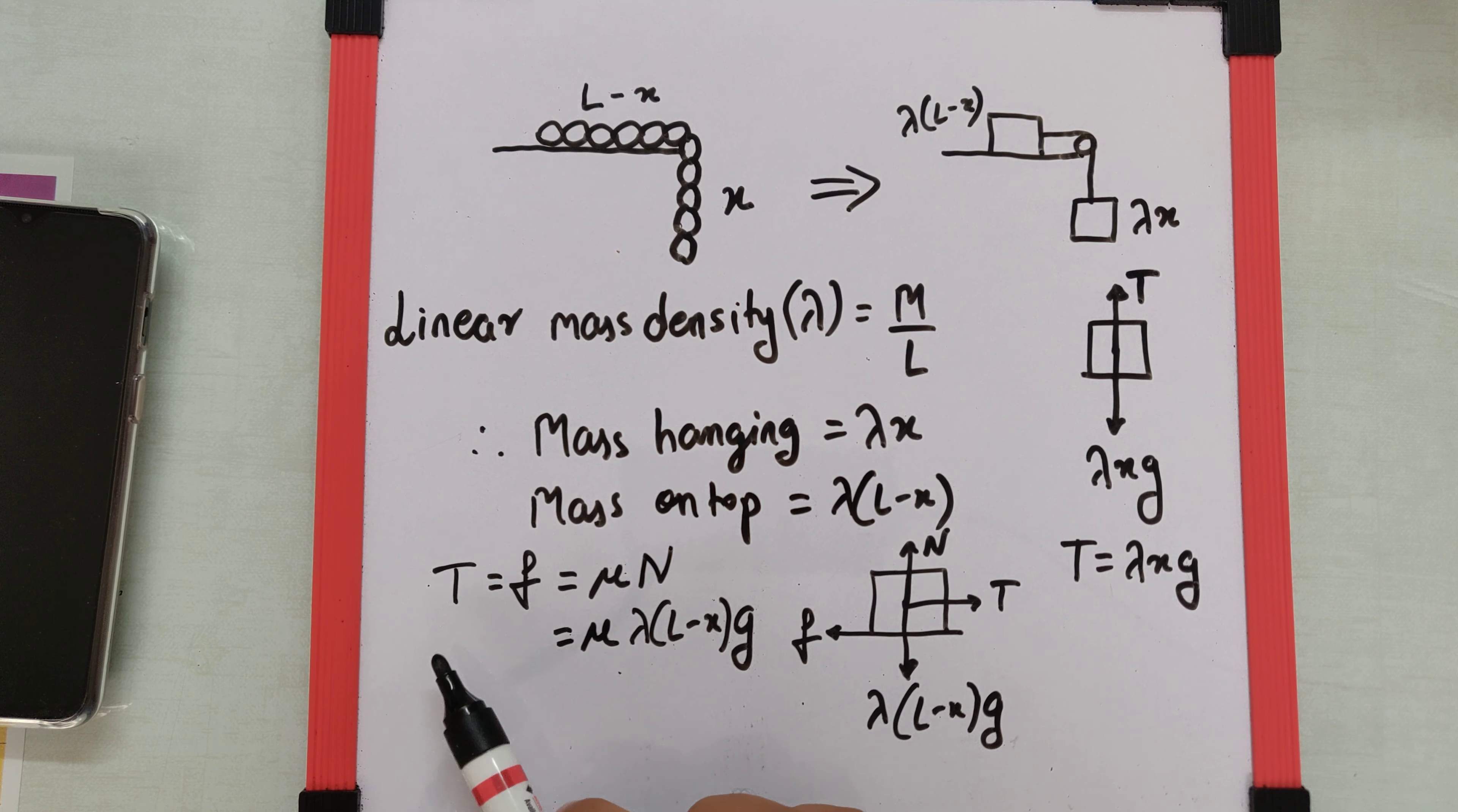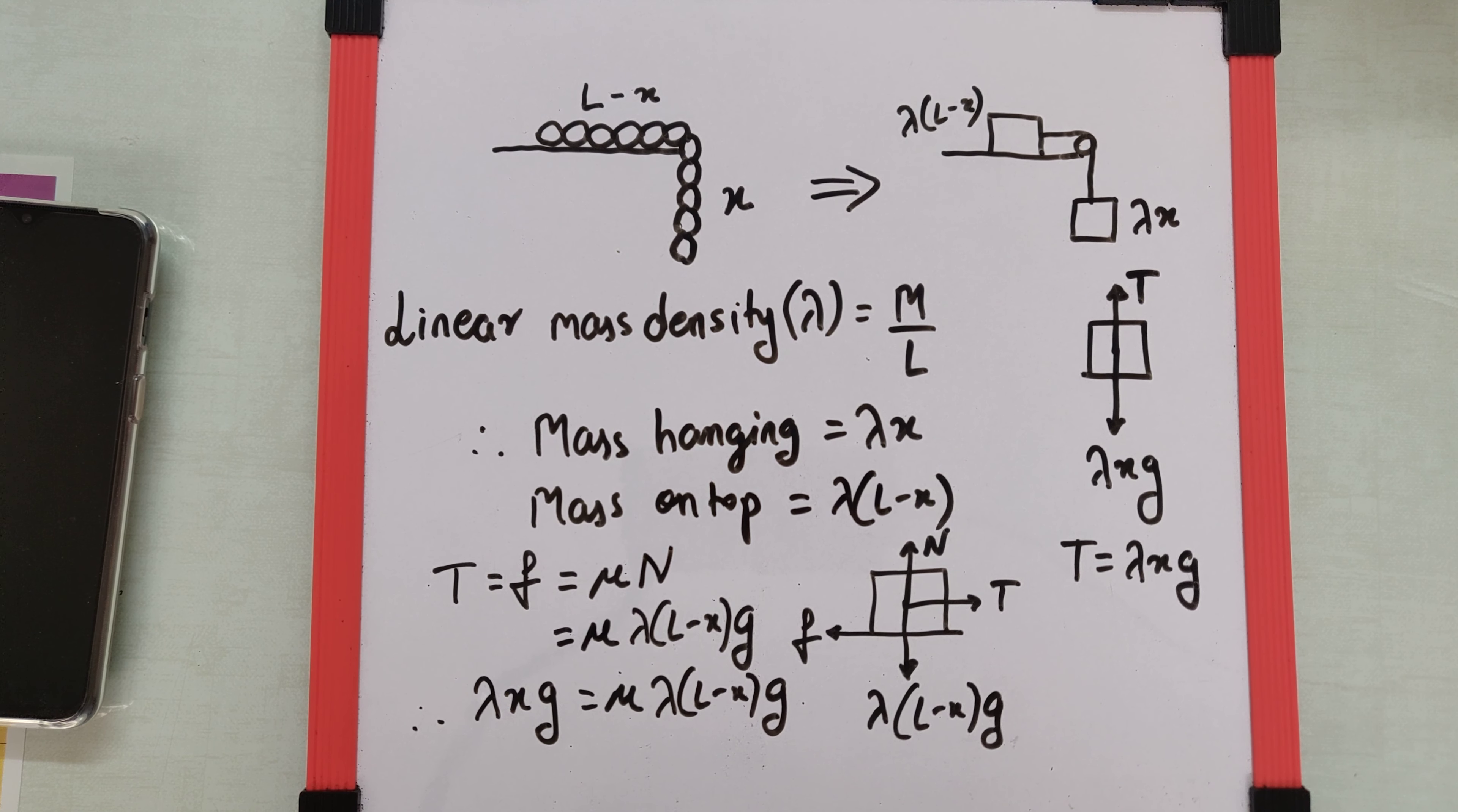So if you understand, the tension is this and the tension is this, so we can equate these two. Therefore we get λxg equals μ times λ(L minus x)g, so λ and g gets cancelled.